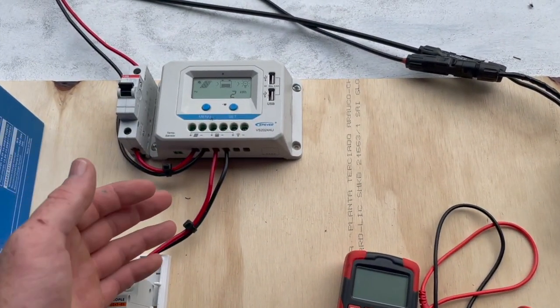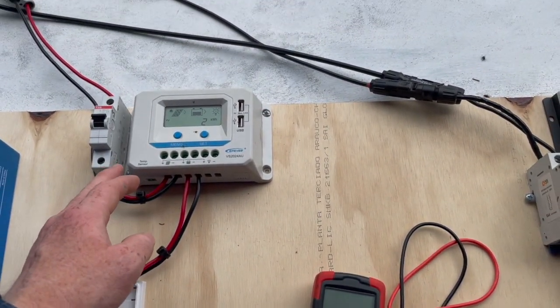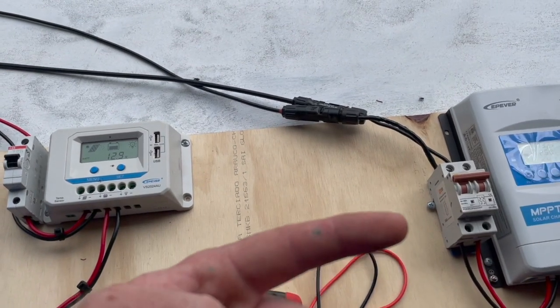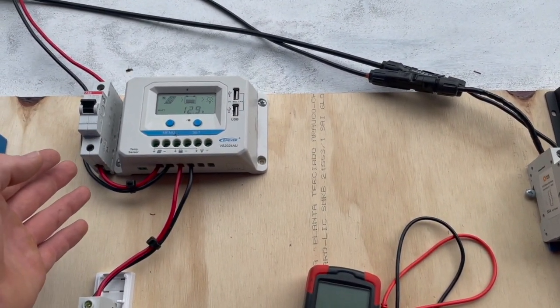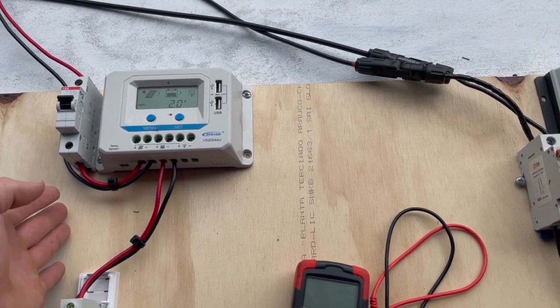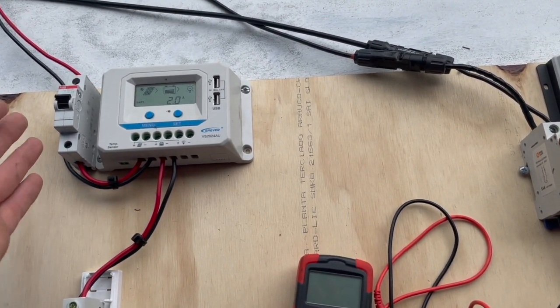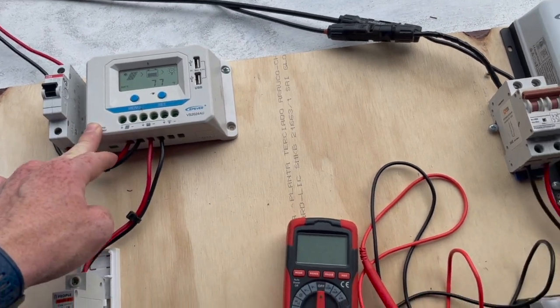A PWM in essence is the cheaper, simpler version of an MPPT. It doesn't utilize, or potentially doesn't utilize, the full amount of power that the solar panel puts out, and we'll explain that and show it in this demonstration.